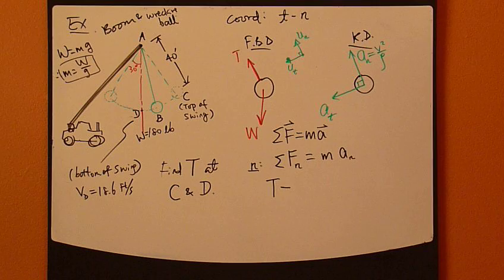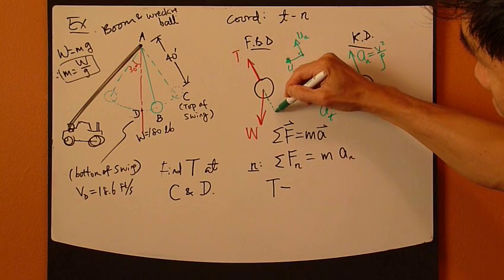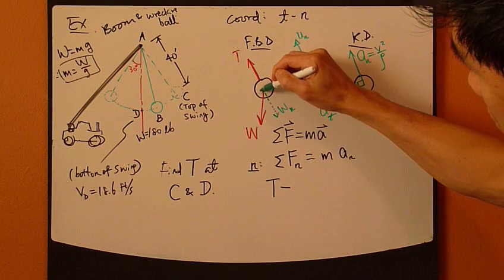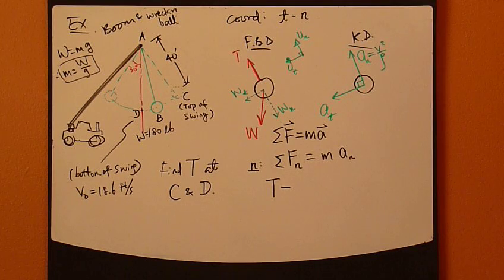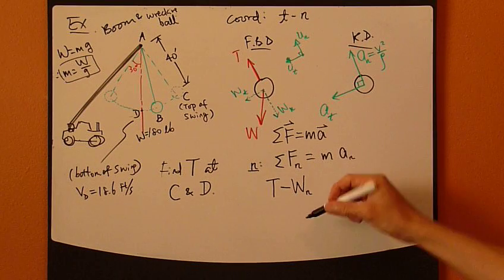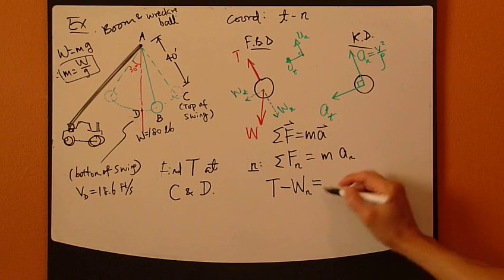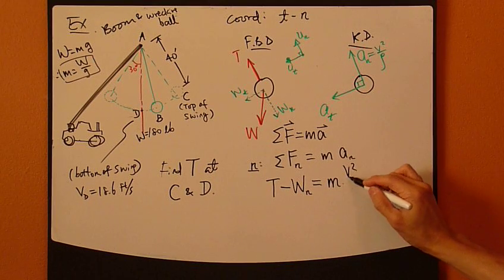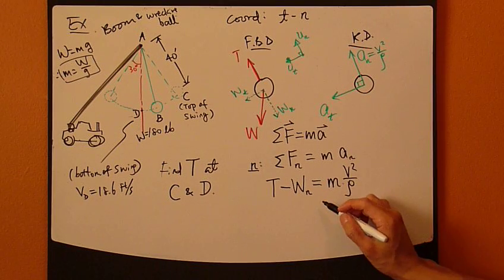Minus, now we have this weight. And this weight can be decomposed into normal Wn and Wt component. So, here, the second term is negative Wn, and this points downward in negative Un direction. And that's all for the left-hand side. Right-hand side, mass times An. An is V squared over rho. And we can just keep going.